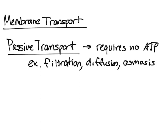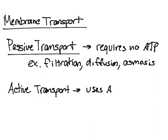Active transport, on the other hand, uses ATP. That's the key difference between active and passive transport.